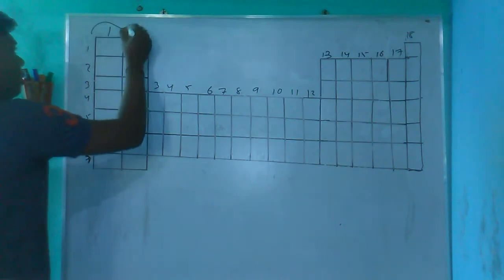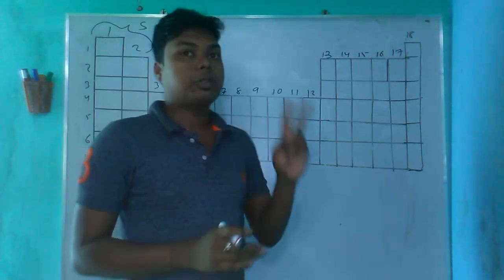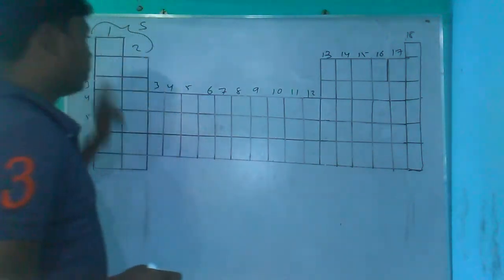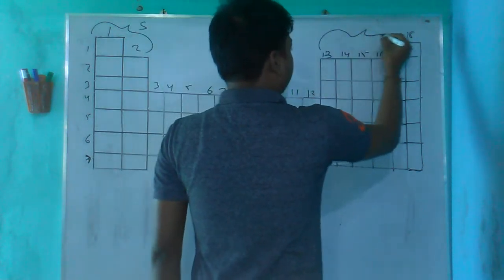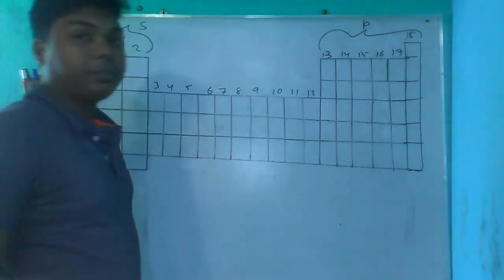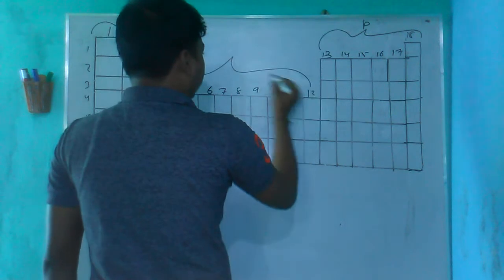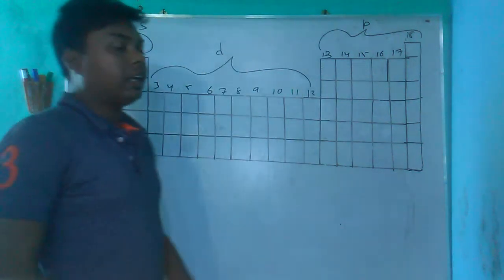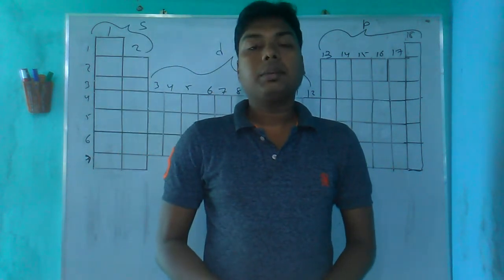For S block, the last electron enters the S orbital. For P block, the last electron enters the P orbital. For D block, the last electron enters the D orbital. The F block elements have the last electron in the F orbital, but we don't need to consider them in this section.